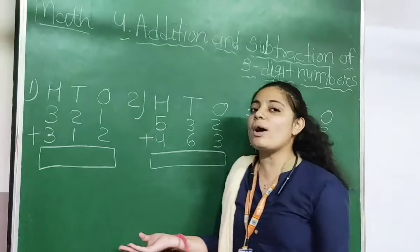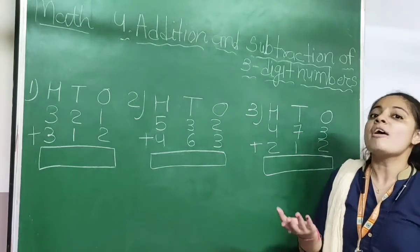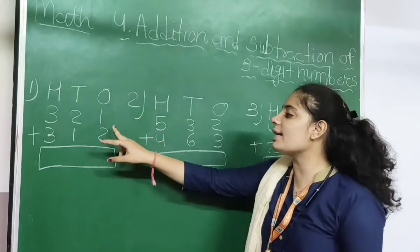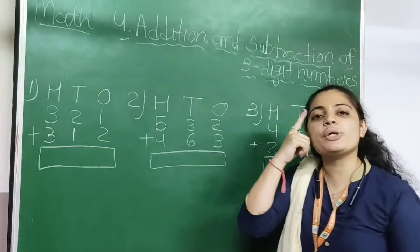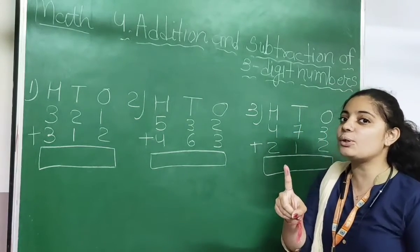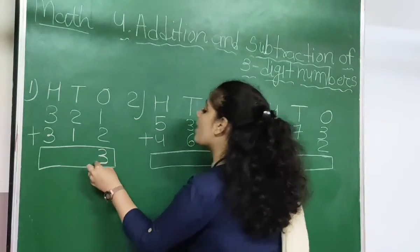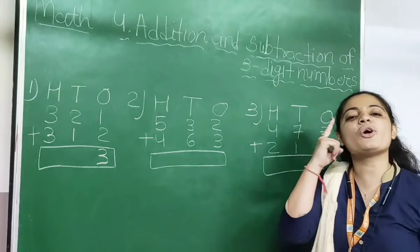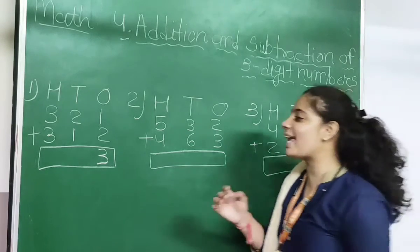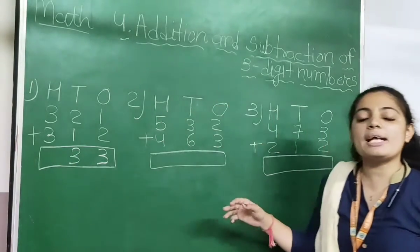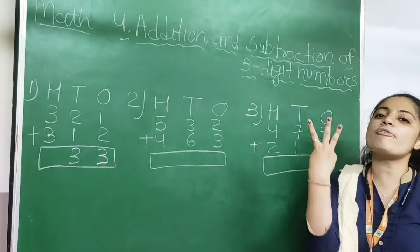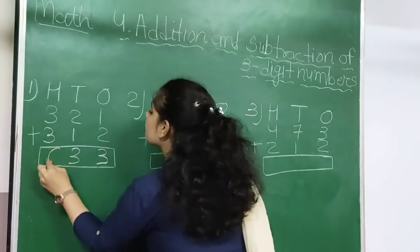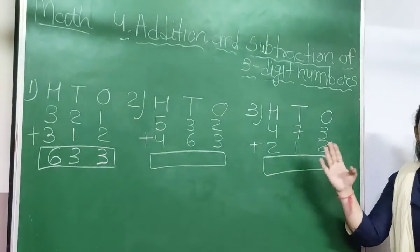Let's calculate 321 plus 312. As you know, we start the calculation with the 1s column. 1 and 2 are in the 1s column — 1 plus 2: keep 2 in your mind, do 1 finger, count after 2 to get 3. Then in the 10s column, 2 plus 1: keep 2 in your mind, do 1 finger — 2 plus 1 is 3. Now in the 100s column, 3 plus 3: keep first 3 in your mind, count 3 fingers — 4, 5, 6. So the answer is 633.